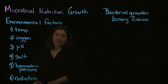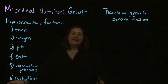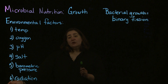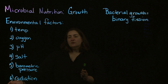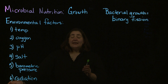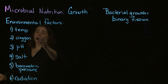What affects the ability of bacteria to grow are a lot of environmental factors. Number one in that is temperature. Bacteria are going to have an optimum temperature where they'll grow. If you're taking microbiology lab, that optimum temperature tends to be right around 36 to 37 degrees Celsius, which is about body temperature. We've got some different classifications with temperature.